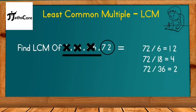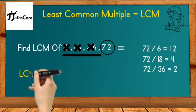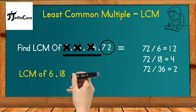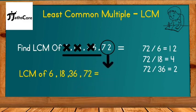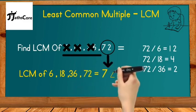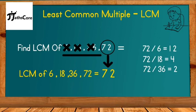In this way, 72 is a multiple of 6, 18, and 36. So the LCM of 6, 18, 36, and 72 is 72. This is your final answer.